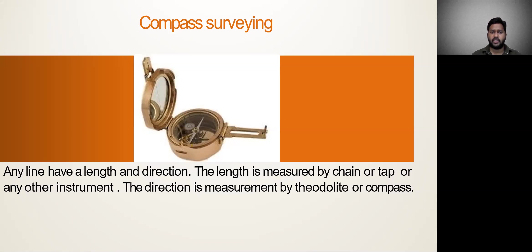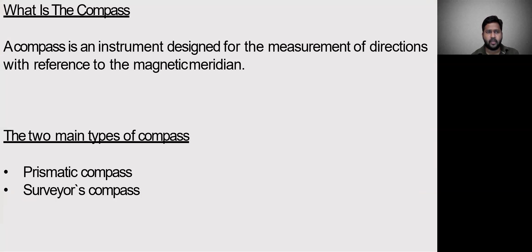The direction will be measured by some instrument, which we are going to discuss in further classes. But now we are going to learn about compass surveying. A compass is an instrument designed for the measurement of directions with reference to the magnetic meridian.